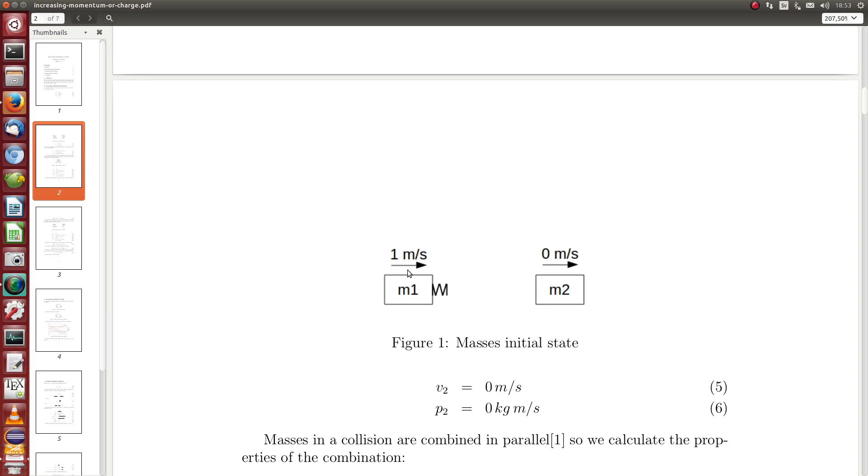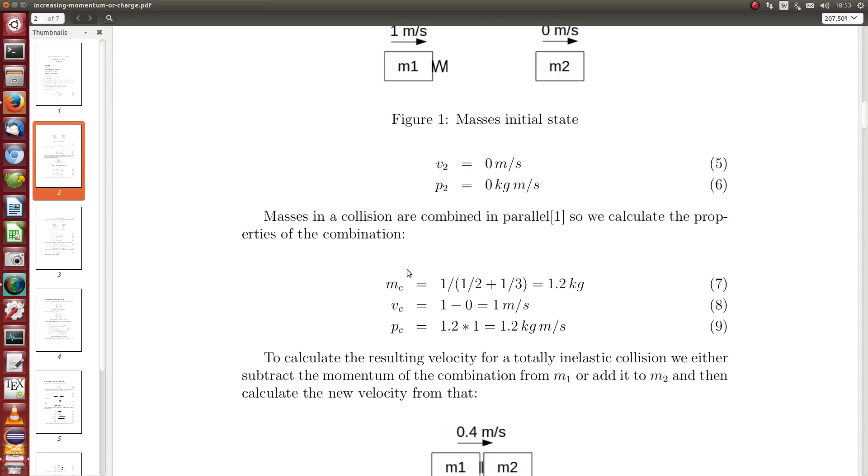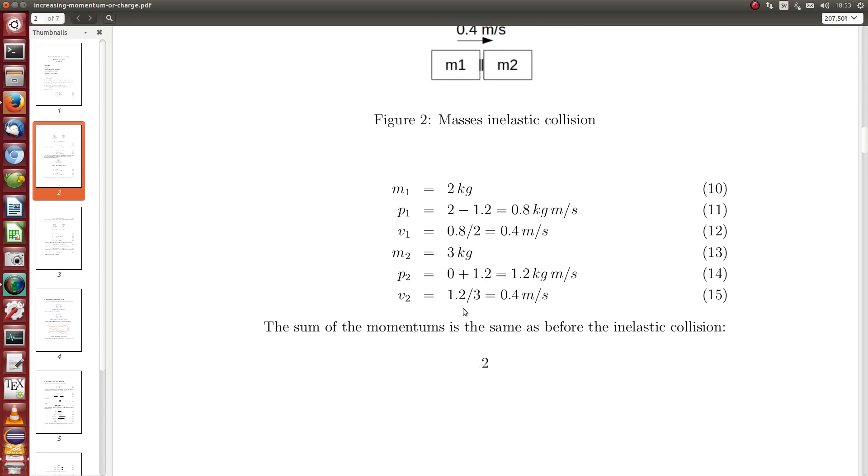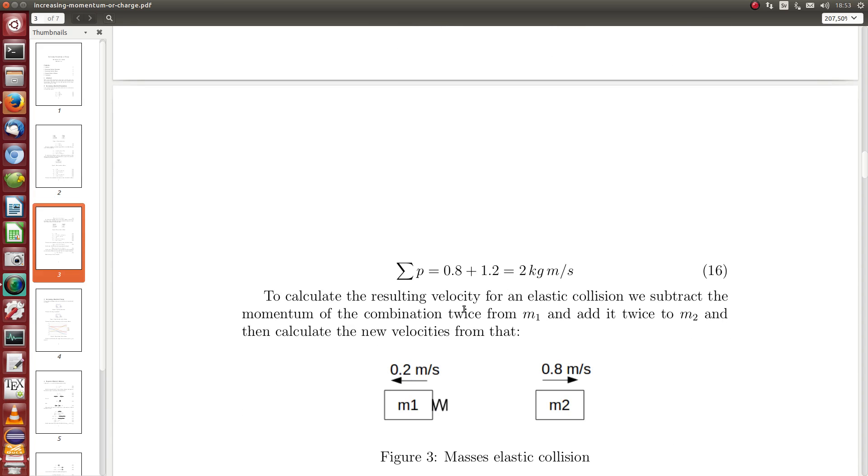If we have a bigger mass here of 3 kilos with a zero velocity and the smaller one with 1 to 2 kilograms with 1 meter per second velocity, when they collide just in the middle of the collision they will have a velocity of 0.4 meter per second.